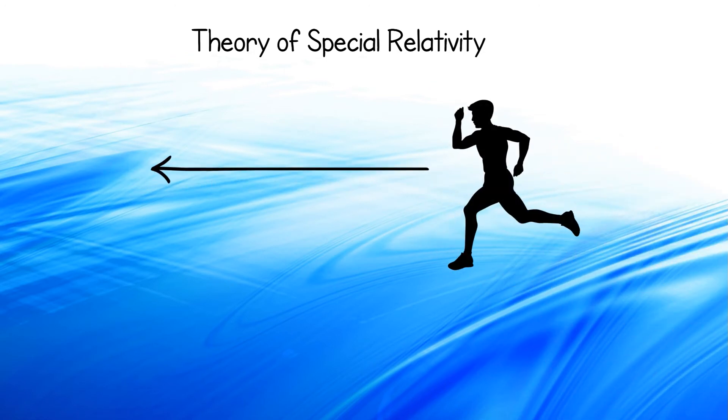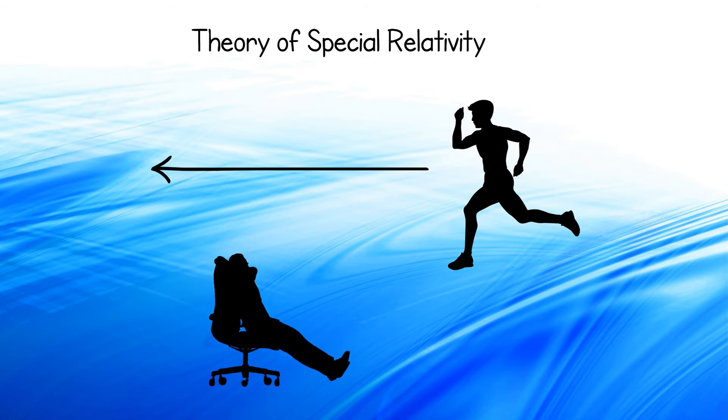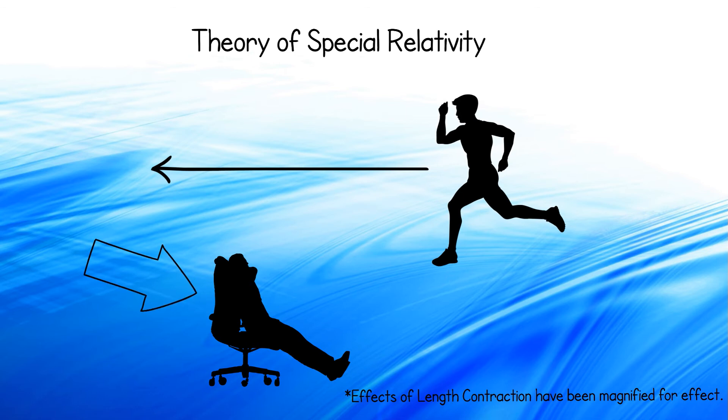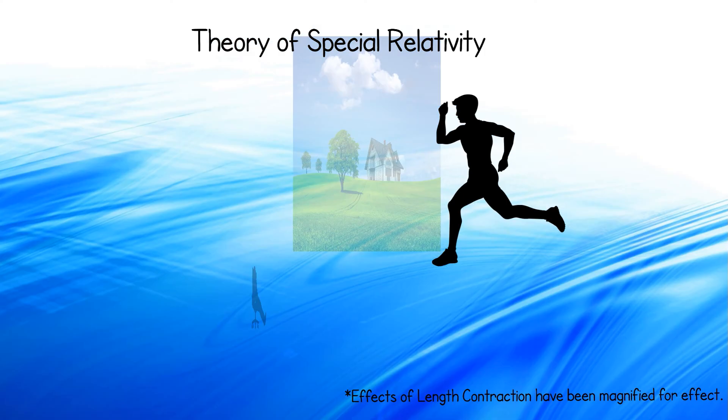So when a sprinter is running, in the perspective of a bystander, he becomes slightly skinnier. However, to the sprinter, not only the bystander, but also the world around him has contracted slightly.